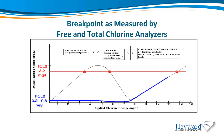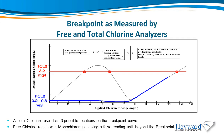Some municipalities have attempted to use free and total chlorine analyzers to control their chloramination process with limited success. As indicated on the graph, a total chlorine analyzer will give the same reading in three possible locations on the breakpoint curve, with no indication of which you are at. Free chlorine reacts with monochloramine, resulting in a small false reading, until we are beyond the breakpoint, where the first true indication of free chlorine is measured. Therefore, it is not possible to determine on which side of the monochloramine maximum hump the plant is operating. An ammonia measurement is required to truly predict the position on the breakpoint curve.